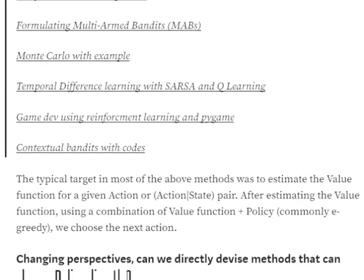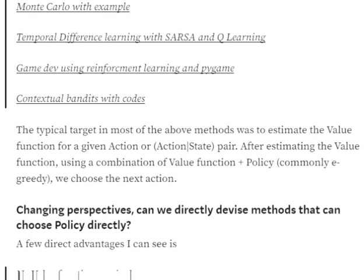In all the methods I'm mentioning — MAB, contextual bandits, temporal difference learning — the major aim of the algorithm is to estimate the value function given the action or action-state pair. By value function, we mean an estimated reward we can get for a particular action given a state. After estimating the value function, we use a combination of it alongside the chosen policy, which can be epsilon-greedy or greedy, to choose the next action.